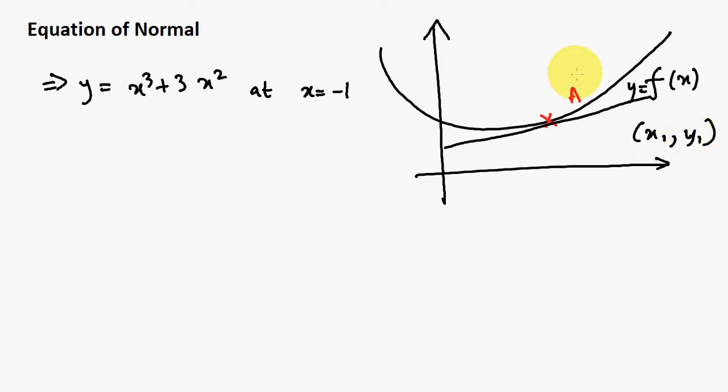Now, what normal simply is, once we have the tangent, the normal is simply a line passing through the same point but perpendicular. I really need to draw better lines, but yeah. So the normal is a line which passes through the same point A, which is given by x₁, y₁, but it's perpendicular to the tangent. So this is the normal, this line over here is the normal. So let's just call this the N, the normal, and T is the tangent.